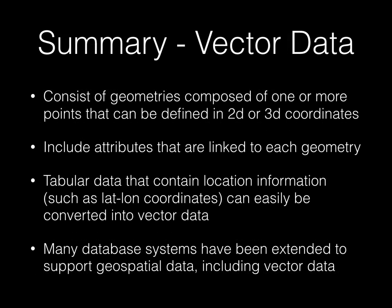In summary, vector data consists of geometries composed of one or more two or three dimensional points, or nodes, that are used to define common geometry types such as points, lines, or polygons. For each one of those feature types, you can link attributes to each feature that allow you to do things such as differential symbolization or selecting features based on their attributes for use analytically or in visualization.